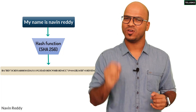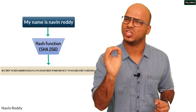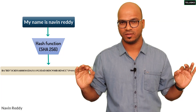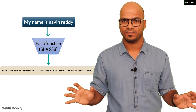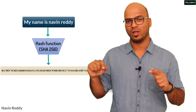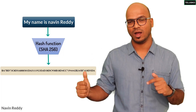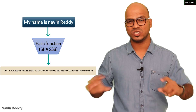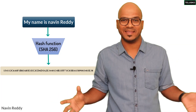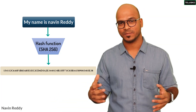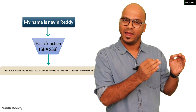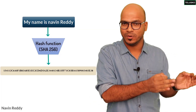The next amazing property is that even a small change in your text will change the hash value in a very different way. For example, if I change 'reddy' from a lowercase r to capital R, you can see the entire hash value changes completely — it's not something someone can guess.